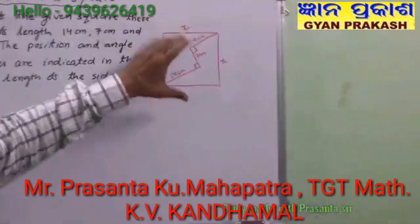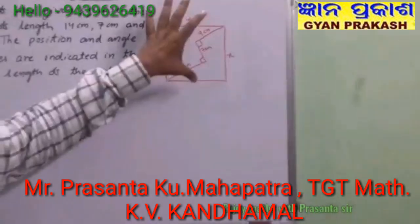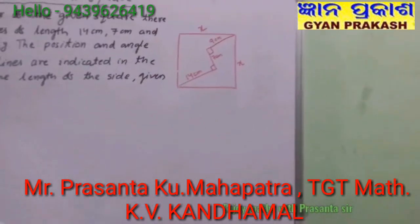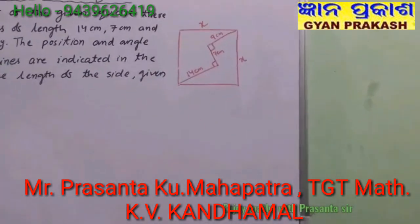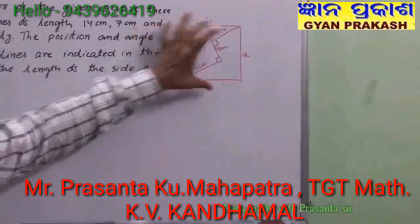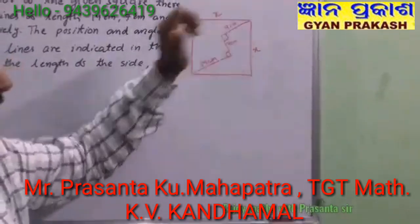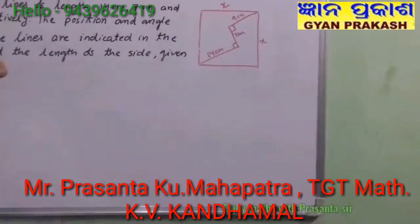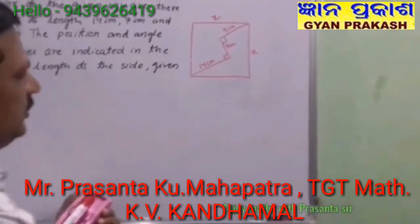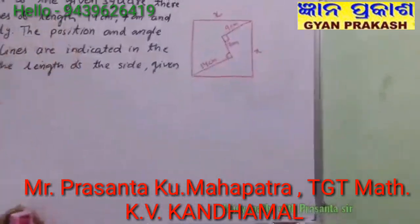If you look at this question, this figure seems to be very confusing and students cannot think which theorem or which concept to apply here so that they will be able to find the side of this square. Now, look closely at these 3 lines.